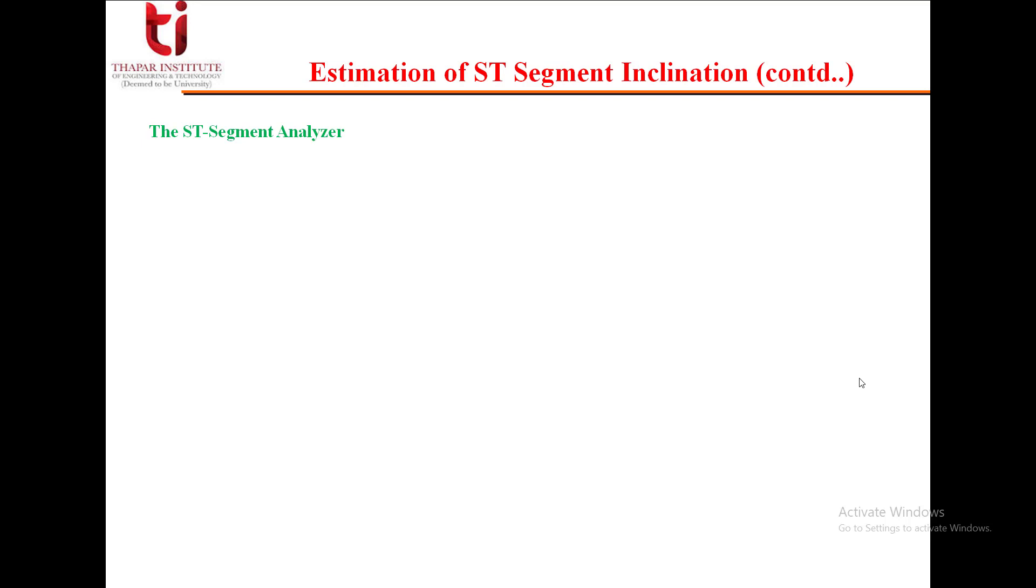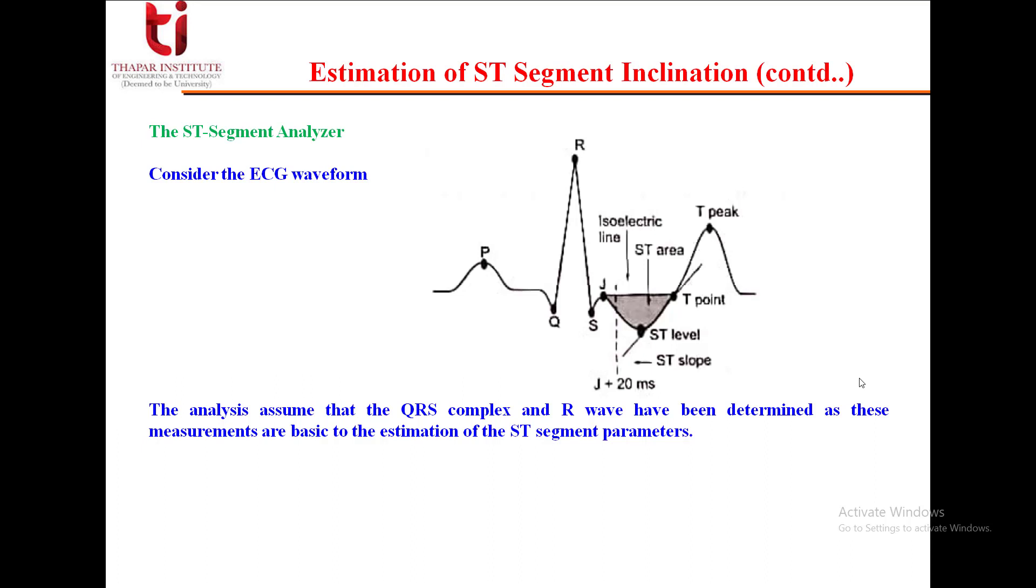Let's look at the ST segment analyzer. Consider this ECG waveform. You can see the ST area. We have taken one isoelectric line. The analysis assumes that the QRS complex and R wave have been already determined with the previous methods. These measurements are basic to the estimation of the ST segment parameters. For an accurate estimation of the ST segment, one needs to define the J point. The J point corresponds to the change in the slope.